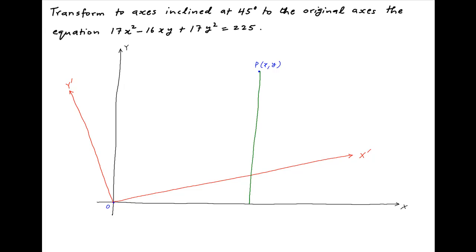Now drop a perpendicular from the point P onto the axis OX. Let's assume that this cuts the line OX' at the point Q and the line OX at the point R. Let's also drop a perpendicular from the point P onto the axis OX'. And finally let's drop perpendiculars from the point T onto the lines PR and the axis OX, and let the foot of the perpendicular be M and N respectively.